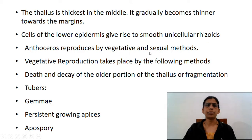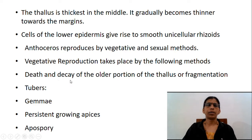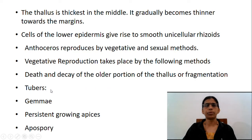Anthoceros reproduces by vegetative and sexual methods. Vegetative reproduction takes place by the following methods: by death and decay of the older portion of the thallus or fragmentation, by formation of tubers, by formation of gemmae, by persistent growing apices, and by apospory.